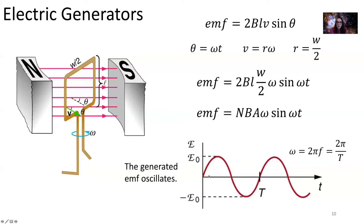This EMF is going to oscillate — it's a sine function. That's where we get our alternating current, our alternating EMF. It oscillates between maximum values, and the frequency is related to the period. Our angular speed omega equals 2 pi times the frequency, and that equals 2 pi over the period of oscillation.